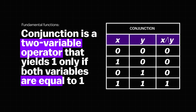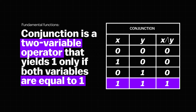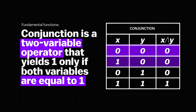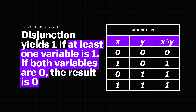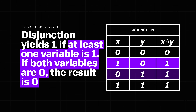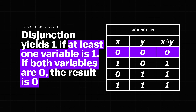Conjunction is a two-variable operator that yields 1 only if both variables x and y are equal to 1. If either of them is 0, the result is also 0 — this is the AND operator. Finally, Boole defined disjunction: it yields 1 if at least one of the variables is 1. If both variables are 0, the result is 0 — this is the OR operator.